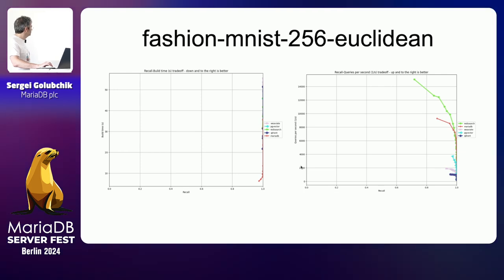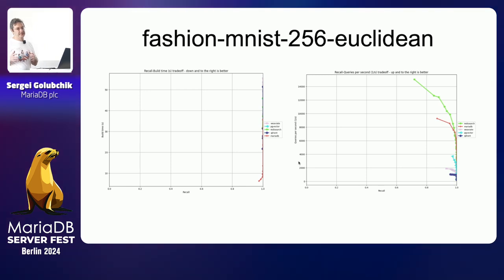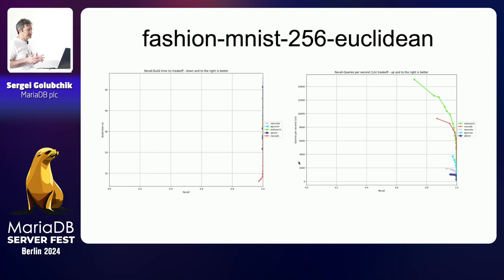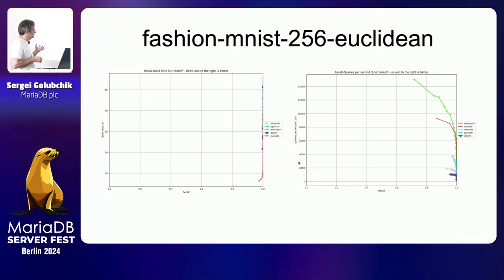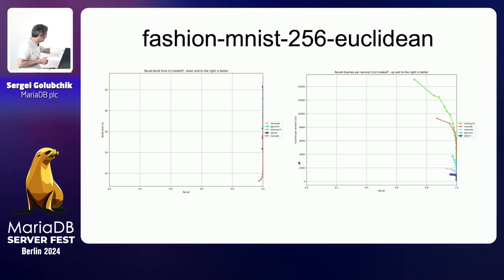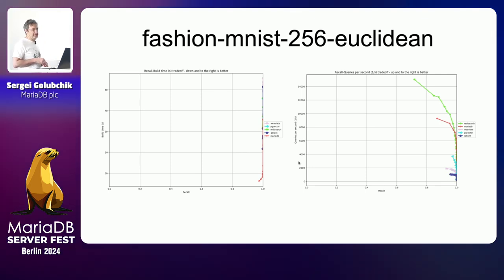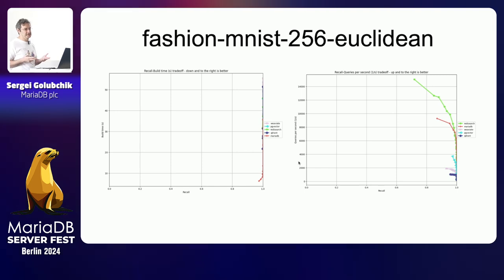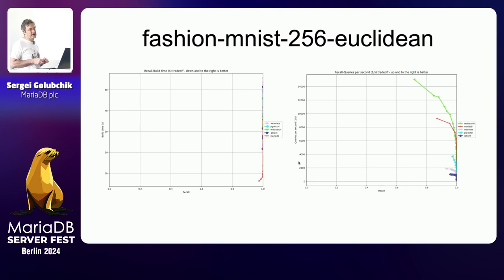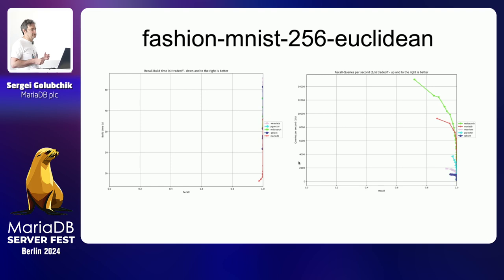To explain these benchmark graphs: the x-axis is always recall. Recall specifies how close the approximate result is to the exact one — these benchmarks had a known exact result from a full table scan, then the index search was compared to it. Recall of 1 means indistinguishable from exact; 0 means nobody needs that. Practically you'd want above 90–95%. At 80% recall, 20% of your results are wrong and you don't know which ones. At 99% recall with LIMIT 100, only one row would be wrong — probably better than a Google search result anyway.